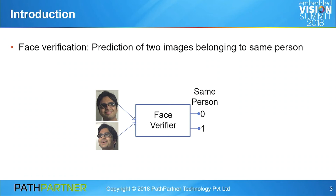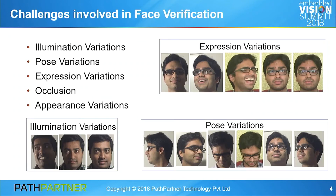To build a robust face verification system, there are several challenges involved. These include illumination variations, pose variations, expression, occlusion, and appearance variations. Given a subject, the illumination can be natural or man-made, and there can be different head poses of the same subject. Irrespective of all these variations, I should be able to recognize a person.